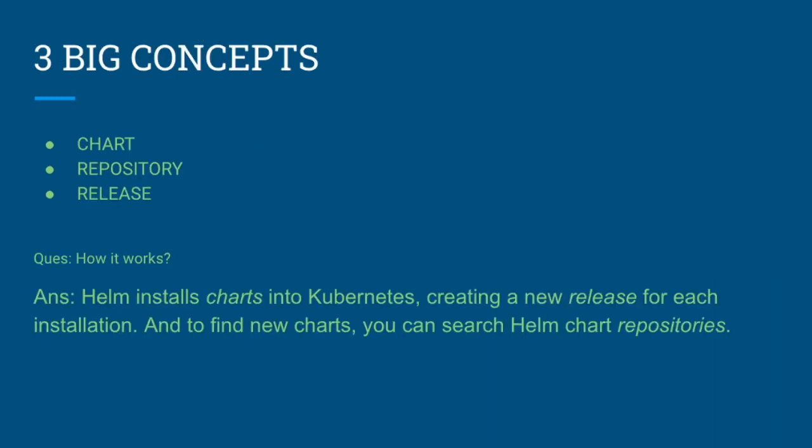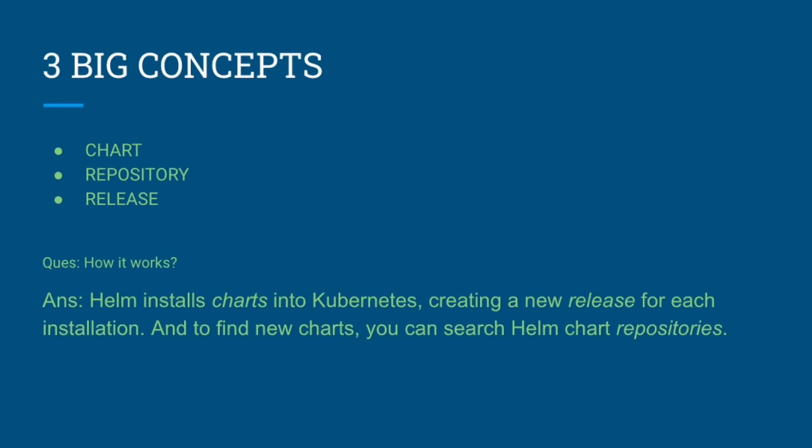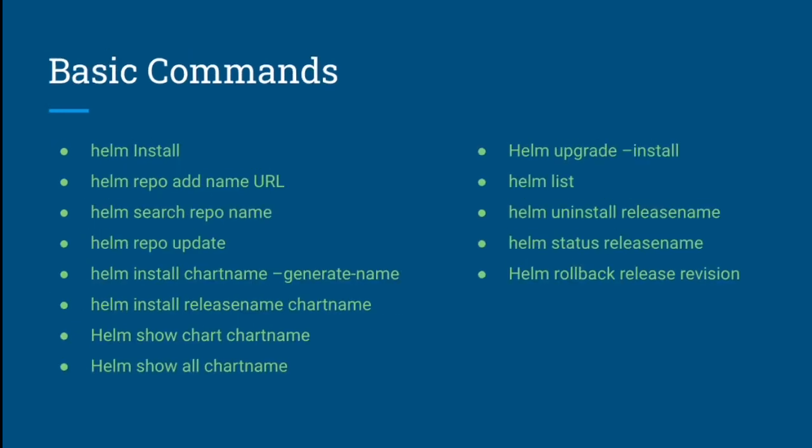There are three basic concepts to understand when working with Helm: charts, repositories, and releases. A chart contains a collection of Kubernetes templates — YAML files mainly for building Kubernetes resources. When we install a chart into a Kubernetes cluster, it creates a release every time. Charts are stored in or pulled from Helm repositories. Helm installs charts into Kubernetes, creating a new release for each installation, and to find new charts, we can search Helm chart repositories.